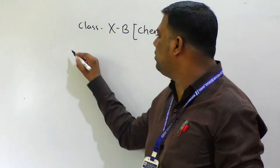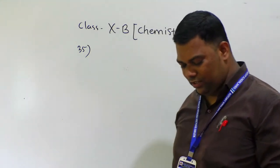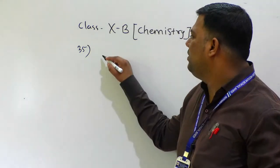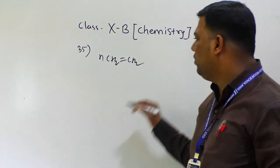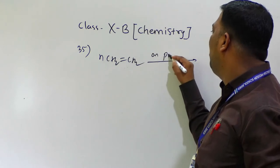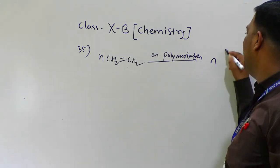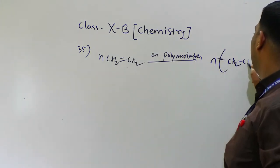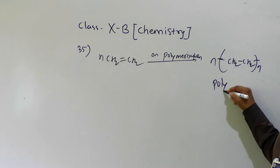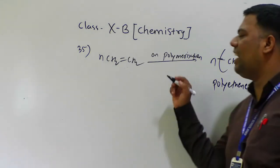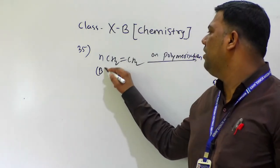Question number 35: formation of polyethene from ethene is an example of which reaction? The reaction involves n number of CH₂=CH₂ units combining. This is polymerization — the reaction undergoes polymerization. So the answer is option B — polymerization reaction.